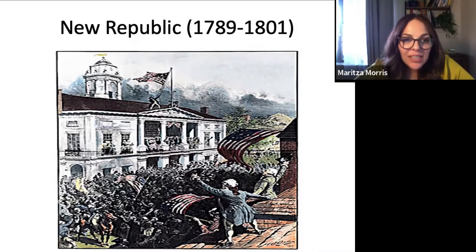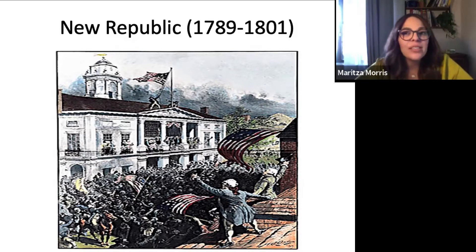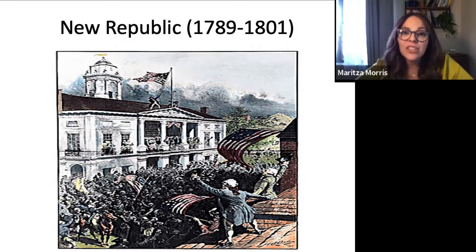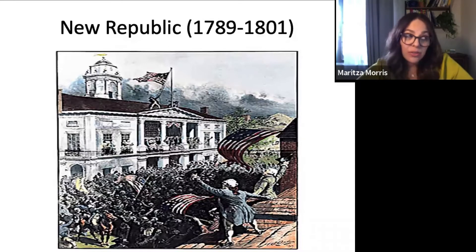Hey guys, welcome back to History 1301. Today's lecture is over the New Republic. Last week we discussed the compromises necessary during the Constitutional Convention — the Great Compromise, which deals with representation in both houses of Congress, the House of Representatives as well as the Senate. We also talked about the Three-Fifths Compromise, which dealt with the issue of slavery and the provision regarding the slave trade.